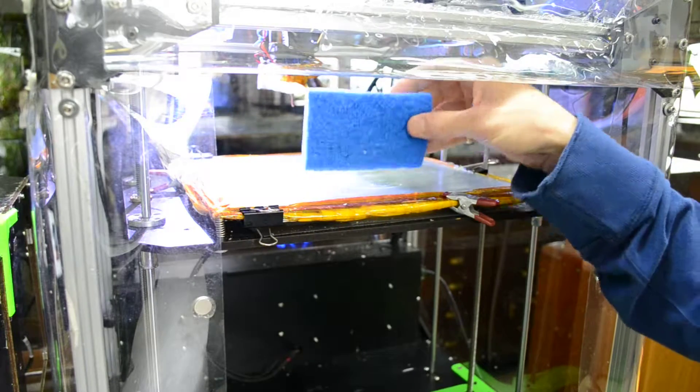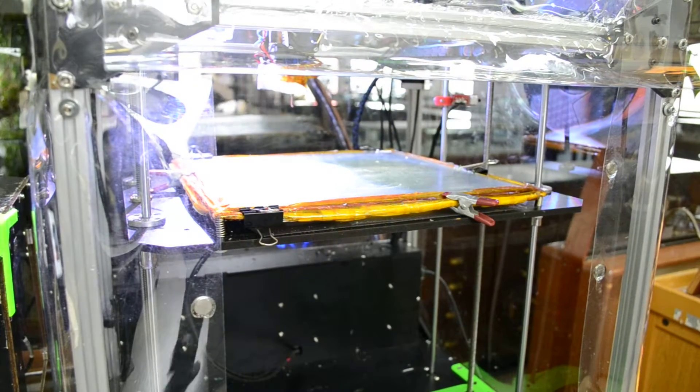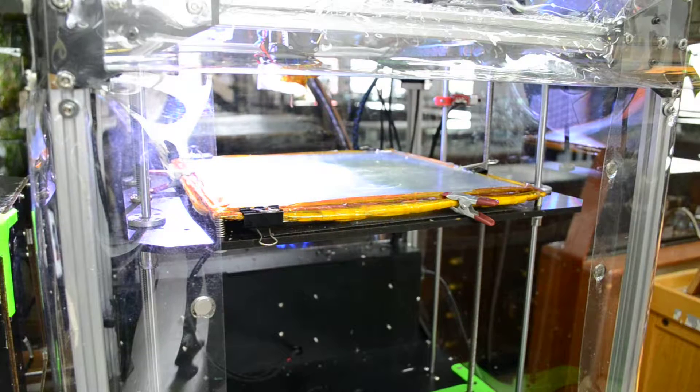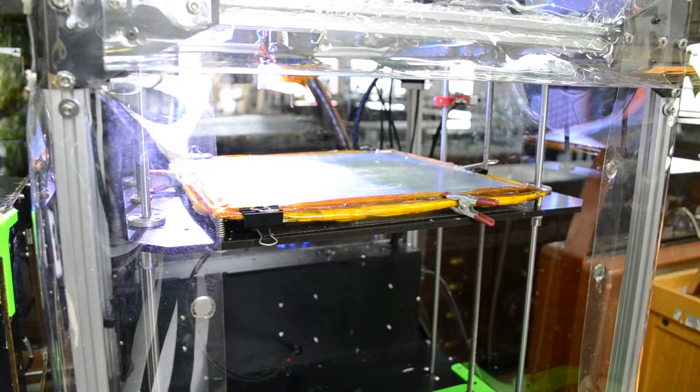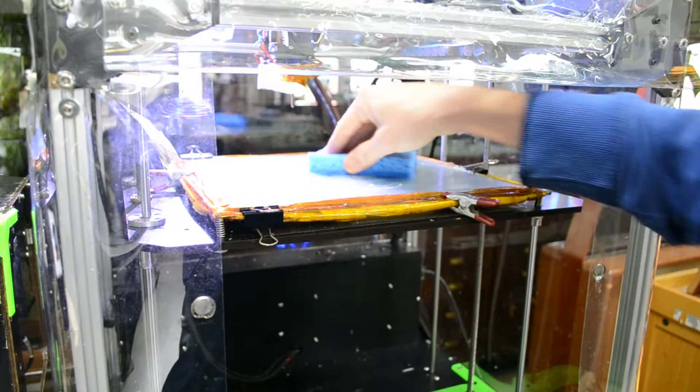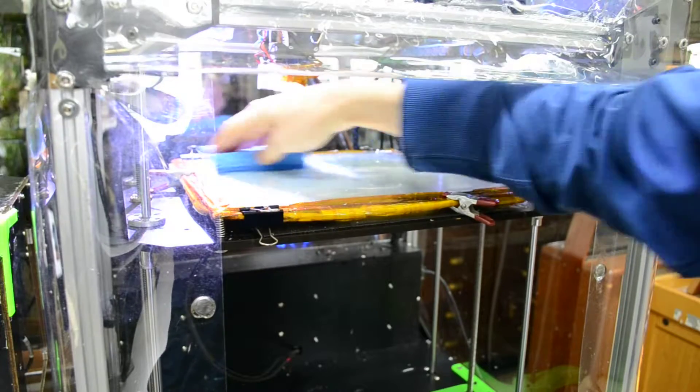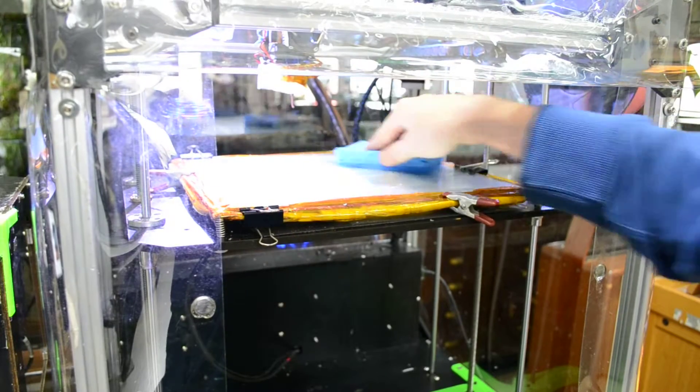Basically what I do is I just wet my sponge until it's damp, not dripping wet, but I just want it good and damp. What I print with on here is a glass sheet. Well, it's not the prettiest right now, but I use a glass sheet.